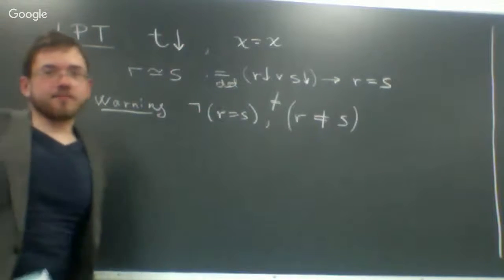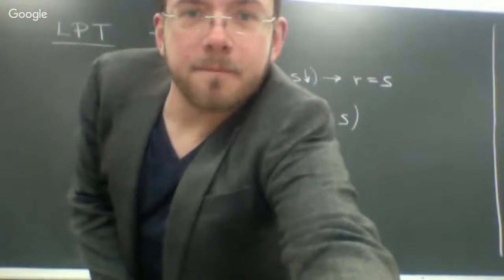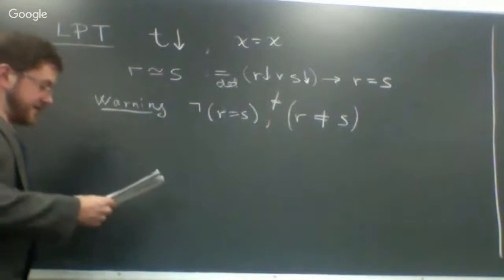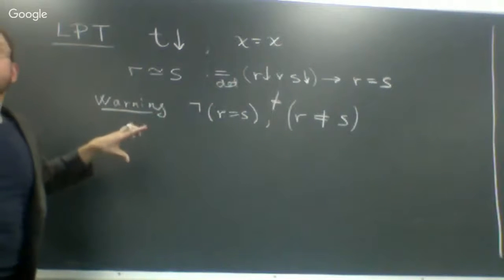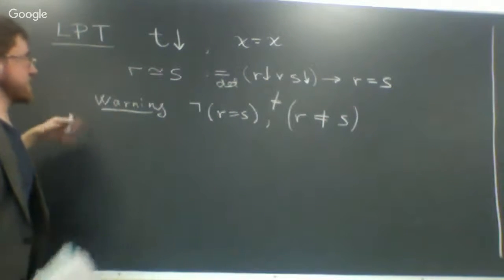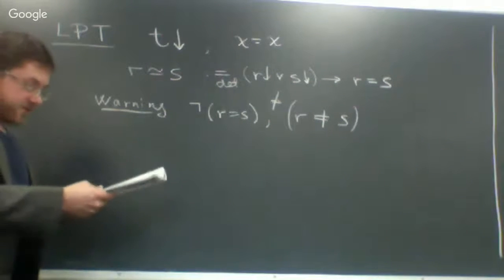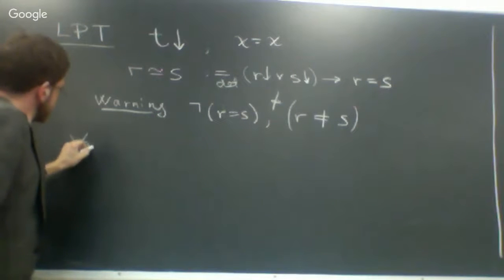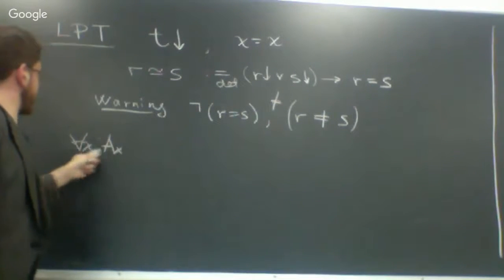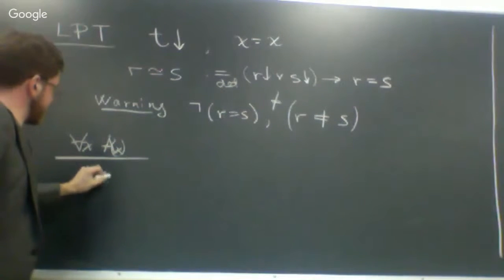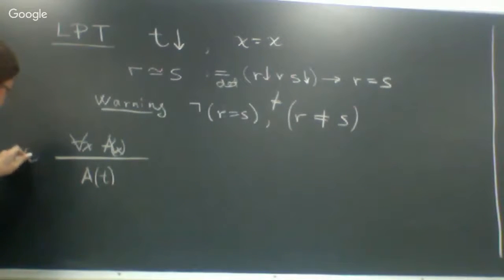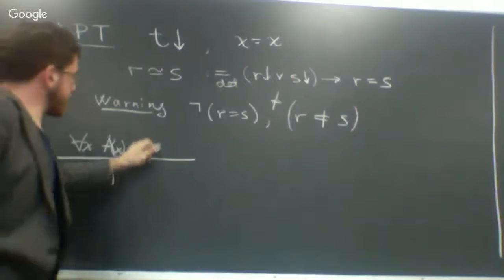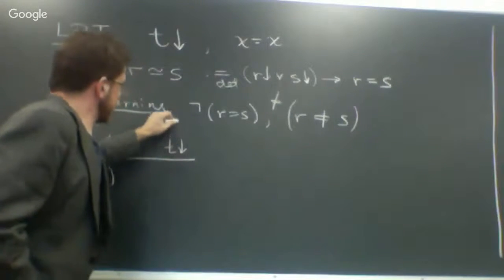The main things you have to change besides the equality rules are the rules for quantifiers. Beeson gives the Hilbert-style rules for introducing and eliminating universal and existential quantifiers. What you have to change is the for-all elimination rule: usually if for all x, A of x, then A of t for any term t. But to account for the fact that terms may not be defined while variables range only over defined objects, we have to add another premise — we must also derive that t is defined. Similarly for exists-intro: usually from A of t we get exists x, A of x, but now we also need to check that t is defined.